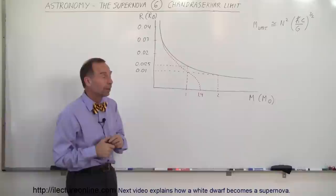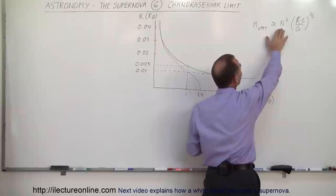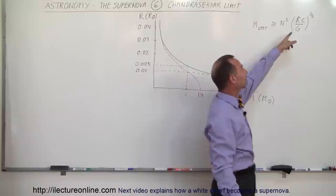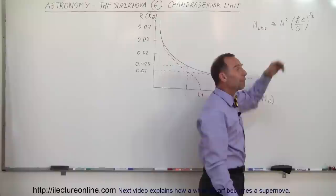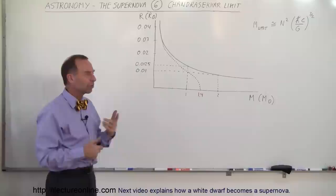They began to figure out these equations, and the equation they finally got down to is where the limit of the mass was equal to n squared times h bar c over G. Now these are some famous constants. H bar is Planck's constant divided by 2π, c is the speed of light, and G is the universal gravitational constant. N represents the number of electrons within the white dwarf per unit mass, so the number of electrons per kilogram.